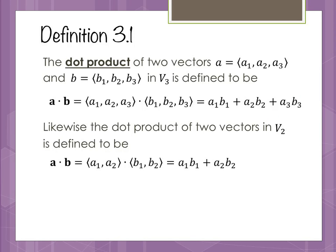Our definition of the dot product says that if we have two vectors — a1, a2, a3, and b1, b2, b3 — in V3, which is three-dimensional vector space, then our dot product is defined to be the sum of the component-wise multiplications of those vector terms. So a1 gets multiplied by b1, a2 by b2, and a3 by b3, and then we add those components together.